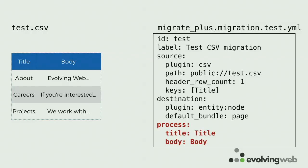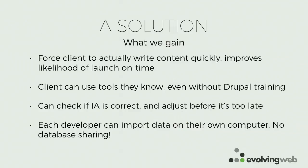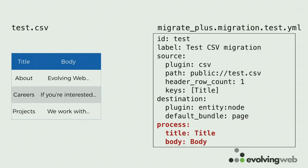This is the kind of migration that my colleague Suzanne wrote for the Trent University project. She does mostly site building and theming — she's not a back-end developer — and she was still perfectly capable of doing this and making it work on that project. So we have all these things where the client can write content early, the client can use the tools they know, we get a chance to check if our architecture is correct, and we get a better environment for developers — all without much work, just a little 15-line file.